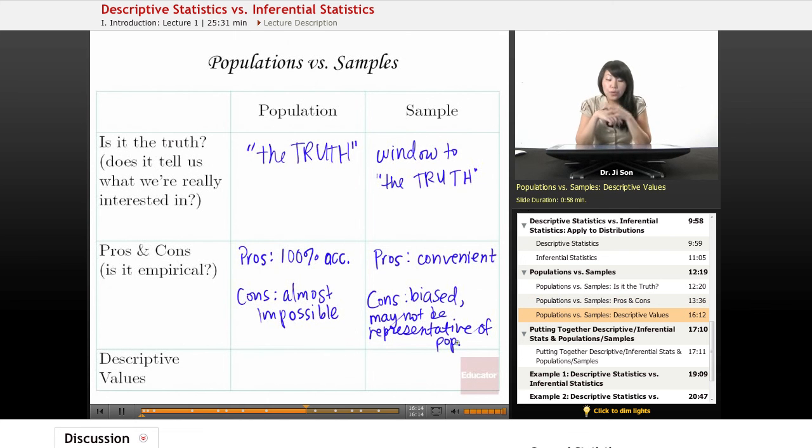All right. So when we describe the population in terms of numbers, and we get some summary values for the population, those descriptive values are going to be called parameters. And a friend of mine who teaches statistics would say, population, parameter.